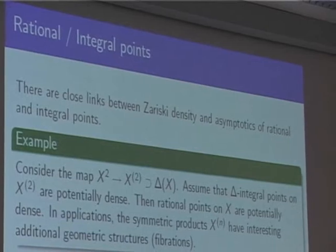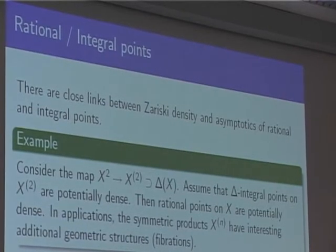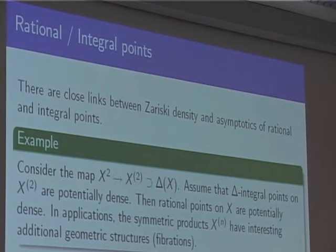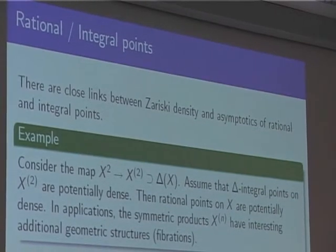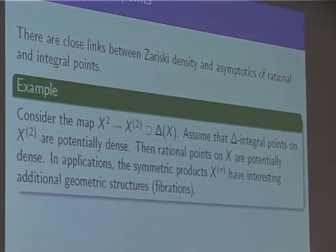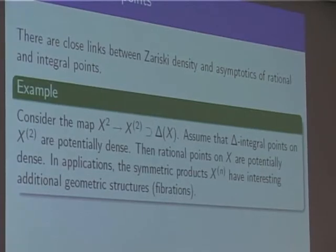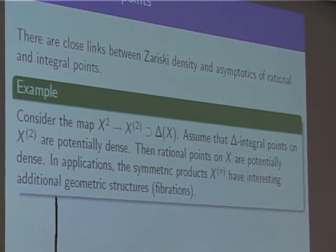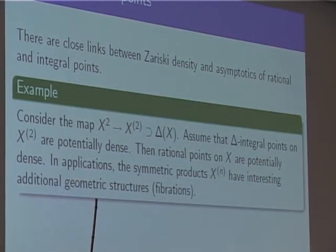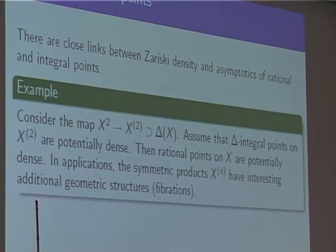Rational points are of course a special case of integral points — that just corresponds to the boundary D being the empty set. So rational points are integral points. This generalization is very relevant to questions about rational points. There are geometric links between Zariski density of rational points and integral points, and I want to demonstrate this in some examples.